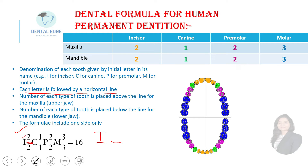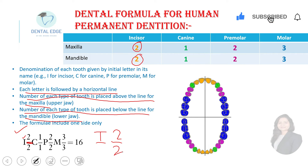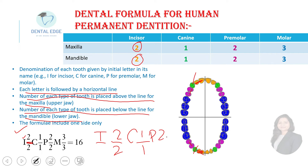The number of each type of tooth is placed above the line for the maxilla, and below the line for the mandible. For example, there are two incisors in the maxilla — written above — and two in the mandible — written below. Then C for canine: one above and one below. Then P for premolars: two above and two below. Then three molars above and three below.